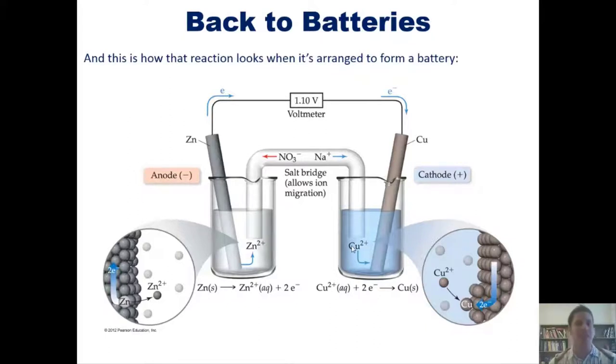Because Cu2+ energetically wants to receive electrons more than zinc zero wants to hang on to them, zinc zero passes its electrons through this wire and down into this rod. As we electrify this rod, those electrons are then absorbed by the Cu2+, which turns the Cu2+ into copper zero. Cu2+ gets reduced.